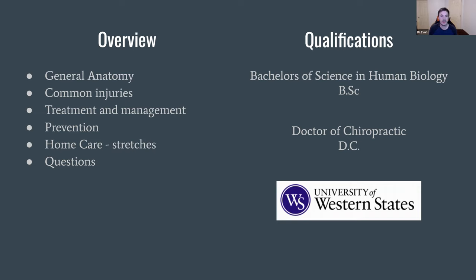Today we'll be covering the general anatomy of the hip — bones, muscles, ligaments, and nerves. We're really going to focus on bone because there's so much to talk about regarding hip bones and the conditions caused by them. We'll cover treatment and management plans, as well as prevention — there's actually a fair amount of prevention in this lecture. There will also be some home care stretches. I've picked three that are a great starting point for someone who doesn't know where to begin with exercising or stretching the hip. You can type your questions and Renee can call me out when relevant. In terms of qualifications, I have a Bachelor of Science in Human Biology and a Doctor of Chiropractic, both from the University of Western States in Portland, Oregon.